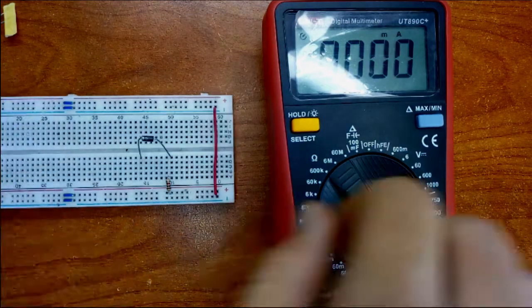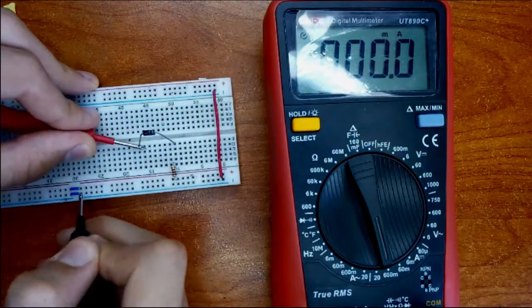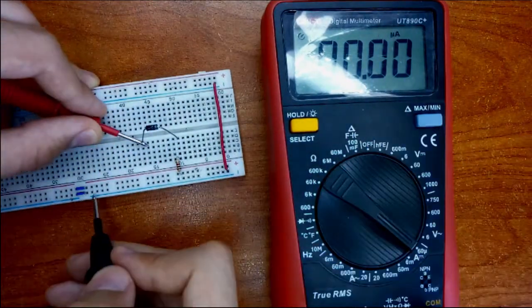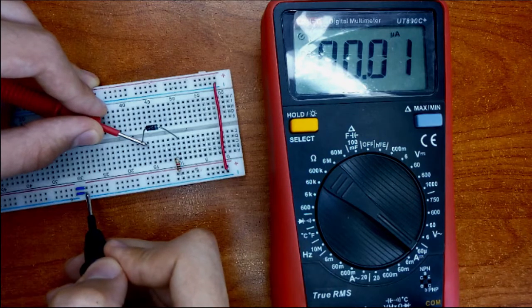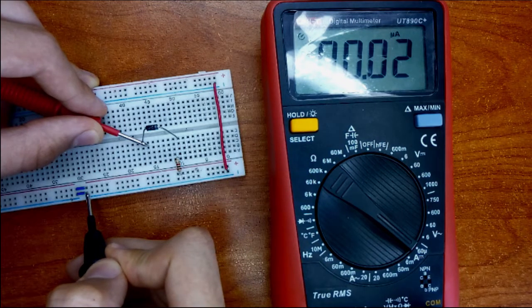Normally when you hook up the diode in reverse, there should not be any current being flown, but actually there is, and it's around 20 nanoamps, which is very small.